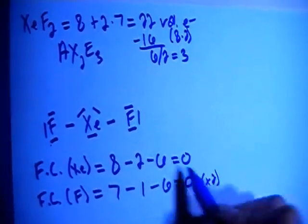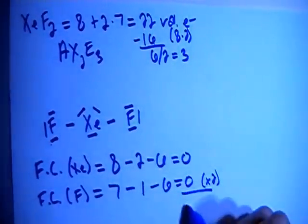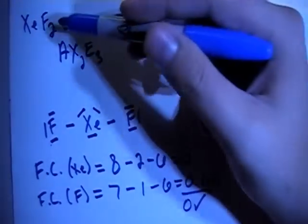Times that by 2, because there's 2 of those, still is going to sum up to 0, which is what we want because this is a non-charged particle.